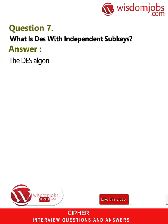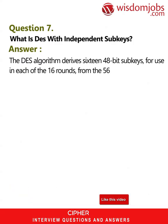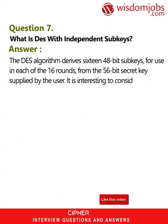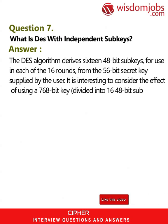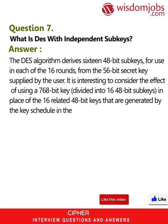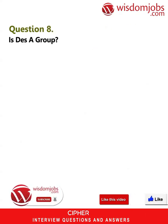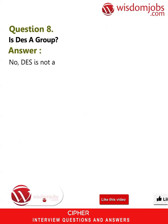Question 7: What is DES with independent sub-keys? Answer: The DES algorithm derives 16 48-bit sub-keys for use in each of the 16 rounds from the 56-bit secret key supplied by the user. It is interesting to consider the effect of using a 768-bit key divided into 16 48-bit sub-keys in place of the 16 related 48-bit keys that are generated by the key schedule in the DES algorithm.